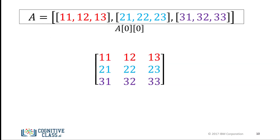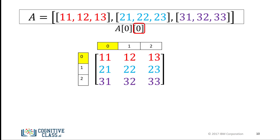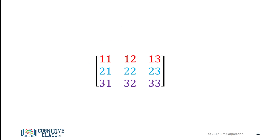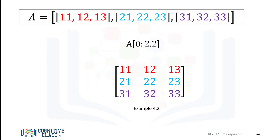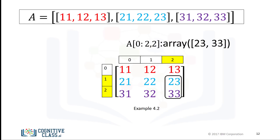Consider this example. This index corresponds to the first row, and the second index corresponds to the first column, with a value of 11. We can also use slicing in NumPy arrays. The first index corresponds to the first row, and the second index accesses the first two columns. Consider this example. The first index corresponds to the last two rows, and the second index accesses the last column.